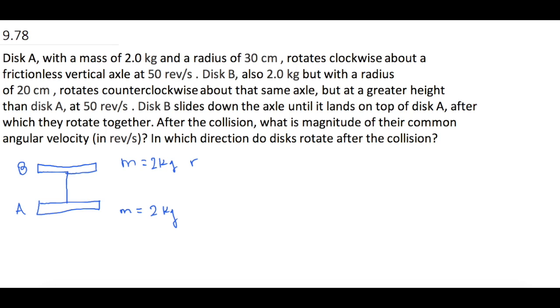All right, so disc B had a radius of 20 centimeters, so that is 0.2 meters. And disc A had a radius of 30 centimeters, which is 0.3 meters. All right, let's see, and disc B, so I'll just put it in the middle here, their initial omega was 50 revolutions per second.